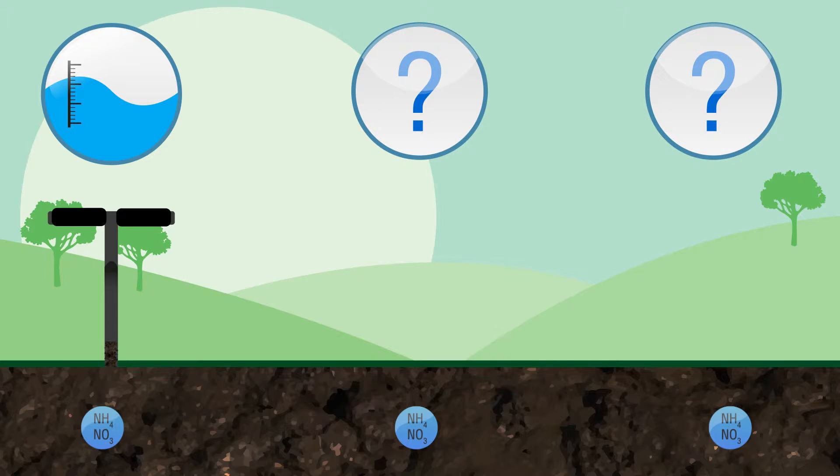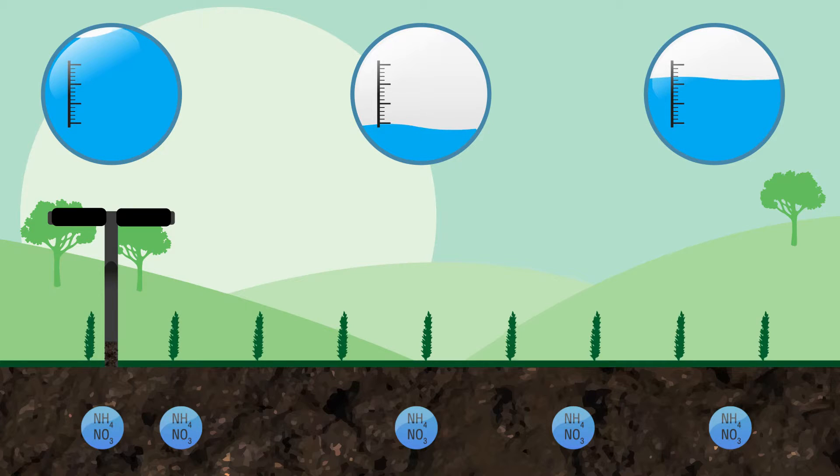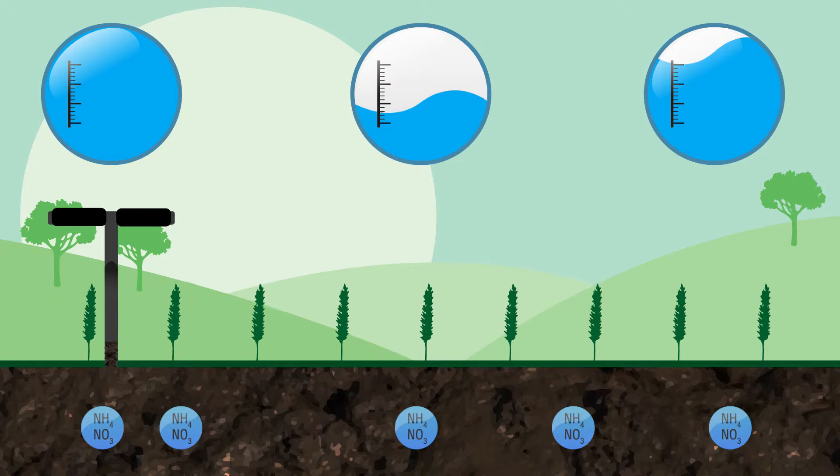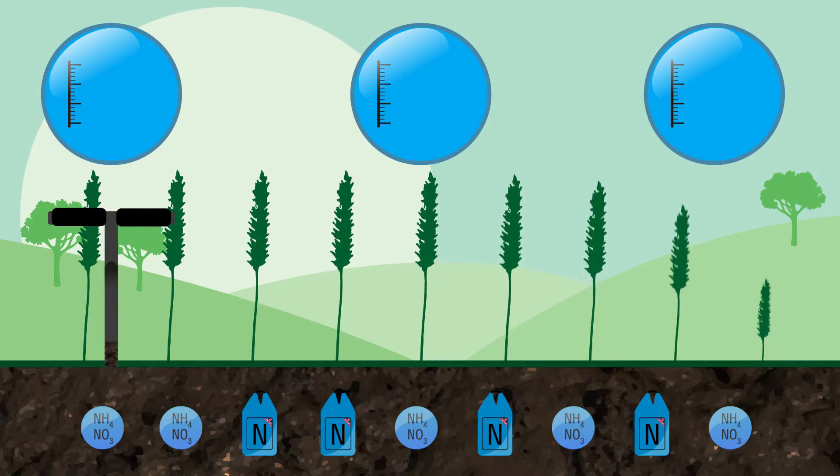But imagine if there was a test that could measure the amount of available nitrogen in the soil at the time of sampling, and that which will become available between spring and harvest. Calculating the seasonal release of soil nitrogen and spring crop nitrogen enables you to calculate the exact amount of fertilizer the plant demands to achieve target yield and quality.